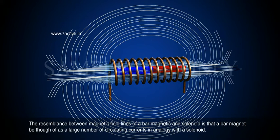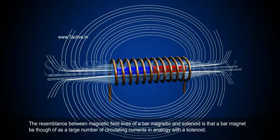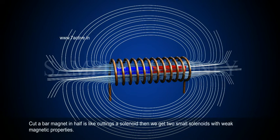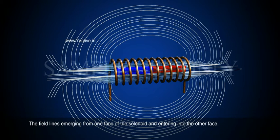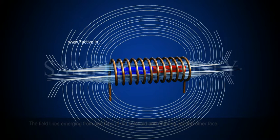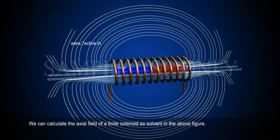The resemblance between magnetic field lines of a bar magnet and a solenoid is that a bar magnet behaves as a large number of circulating currents, in analogy with a solenoid. Cutting a bar magnet in half is like cutting a solenoid — we get two small solenoids with weaker magnetic properties. The field lines emerging from one end of the solenoid and entering the other end allow us to calculate the axial field of a finite solenoid, as shown in the figure.